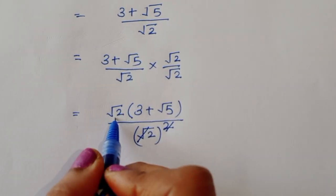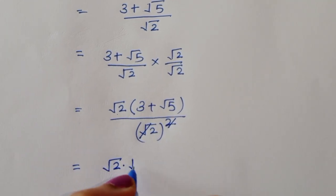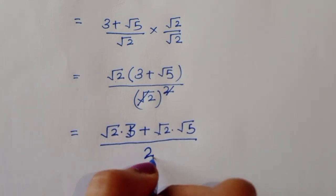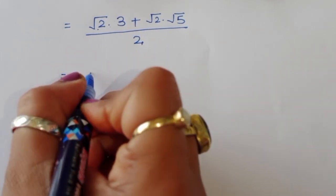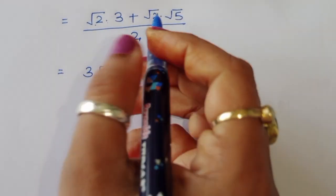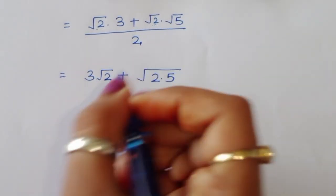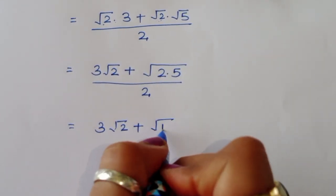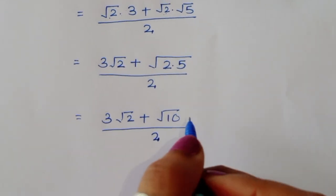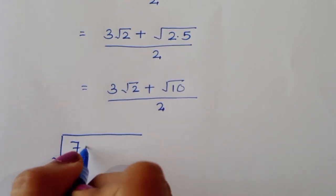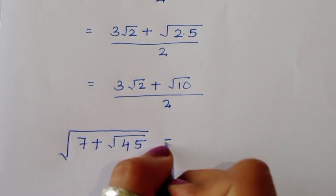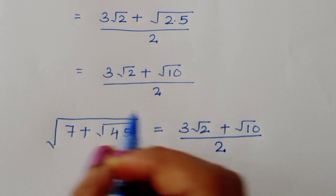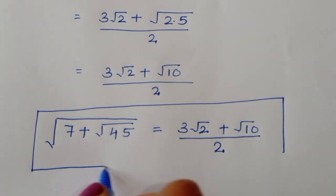Multiplying out the numerator: square root of 2 times 3 gives 3 square root of 2, and square root of 2 times square root of 5 gives square root of 10. So the result is 3 square root of 2 plus square root of 10, divided by 2. Therefore, the value of square root of 7 plus square root of 45 equals (3 square root of 2 plus square root of 10) divided by 2. This is the solution. Thank you.